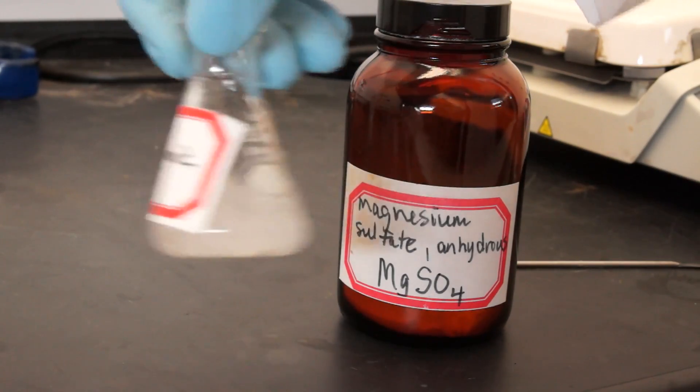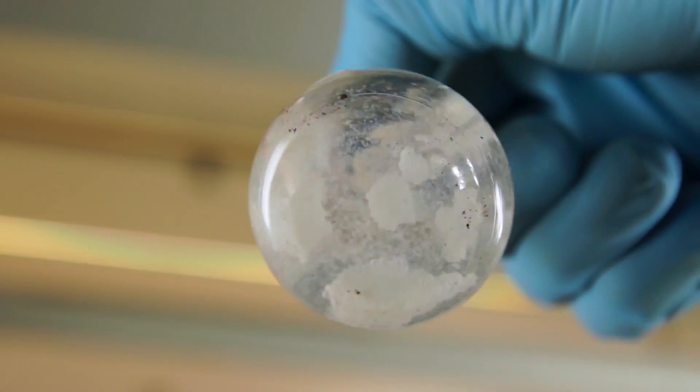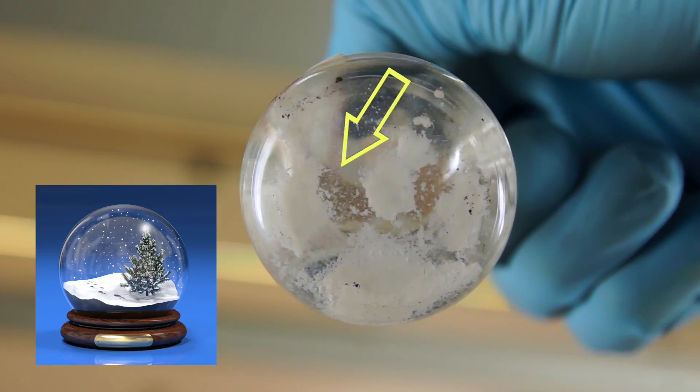Now shake it around. If you've added enough, it should look a little bit like a snow globe with some magnesium sulfate floating around.